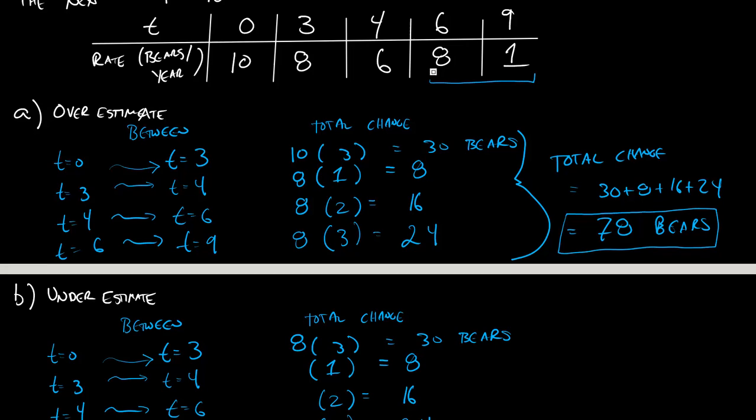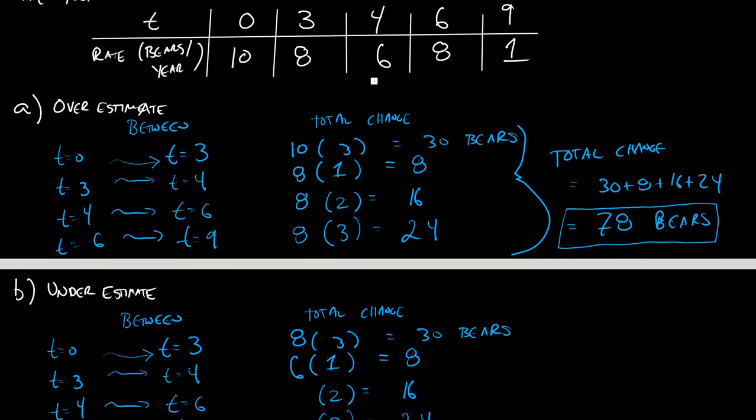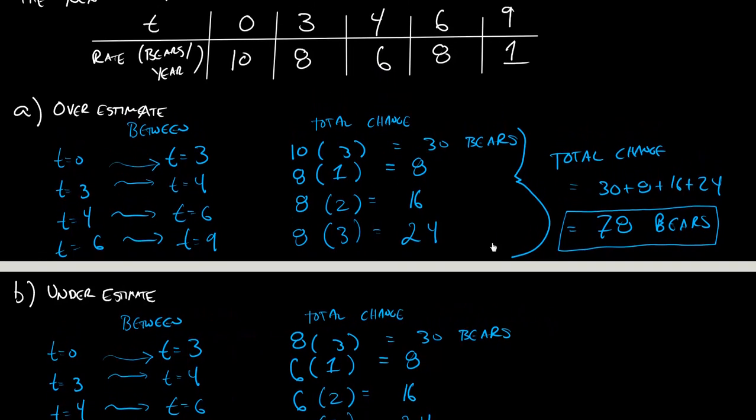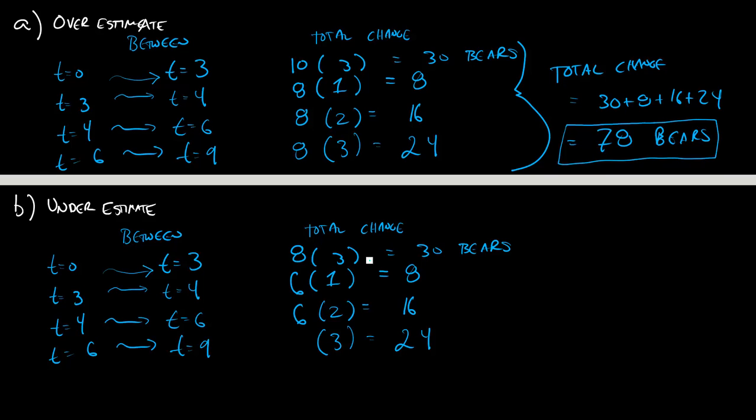And between t equals 3 and t equals 4, what number would I use? Well, I want to use the lowest number possible between these two. And so that will be a 6 between t equals 4 and t equals 6. Again, I want to use the lowest number possible. It's not necessarily going to be the left or the right. And that will also be a 6. And then between t equals 6 and t equals 9, I want to use the lowest number possible, not necessarily the left or the right. And the lowest number possible here is 1.